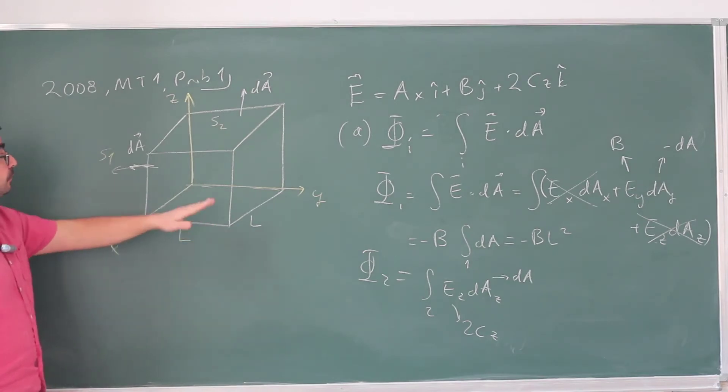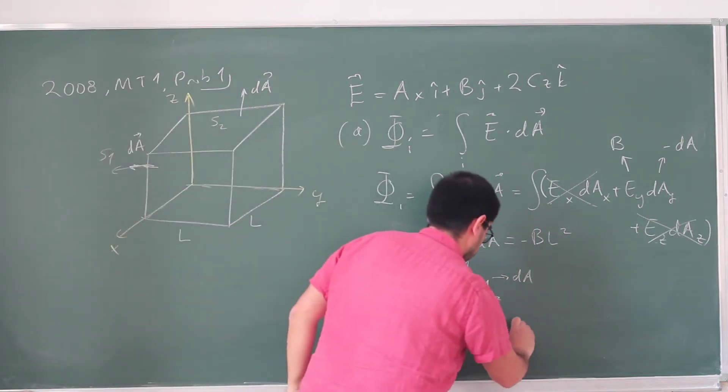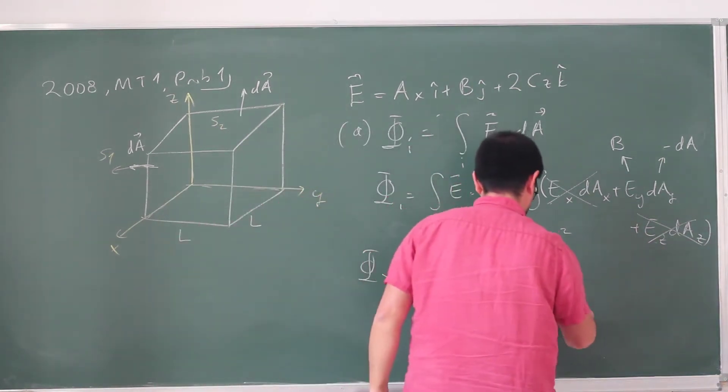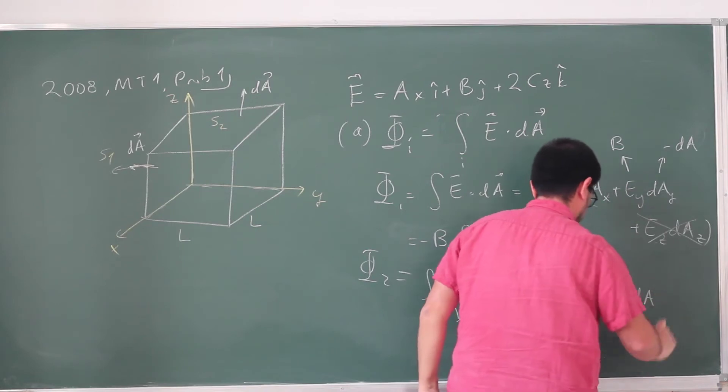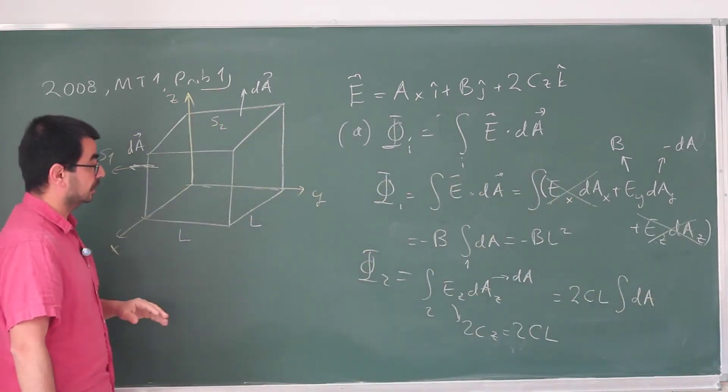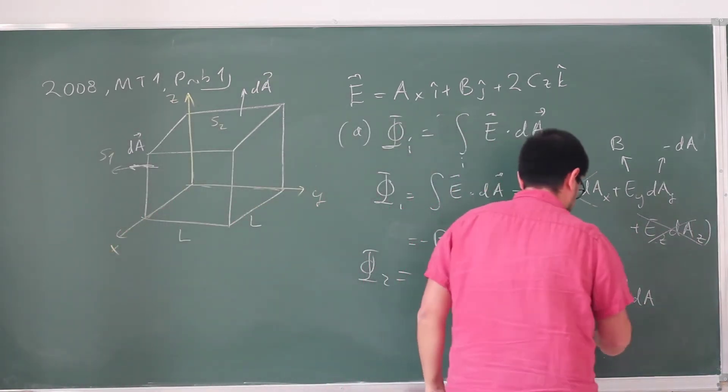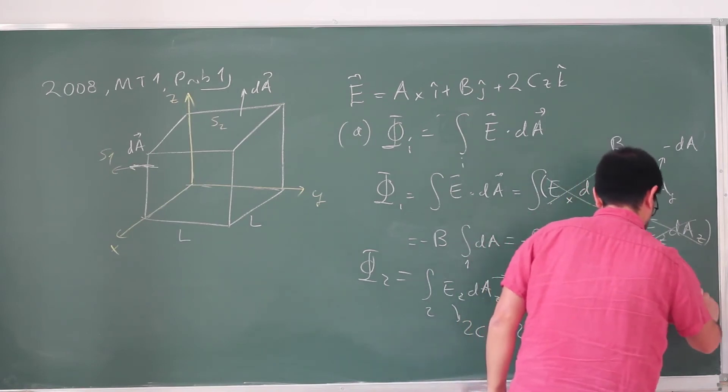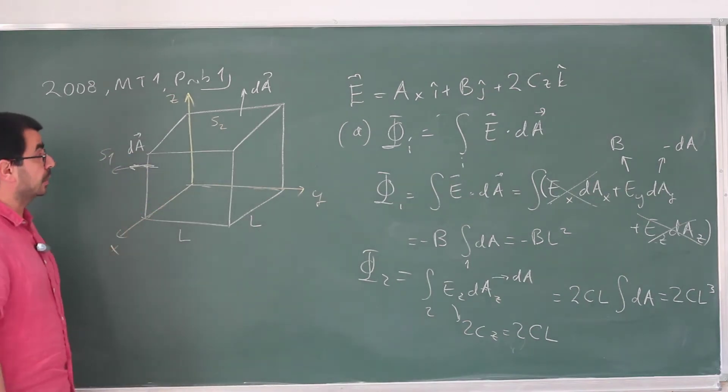Now what is the value of z? Well, for this face, the value of z is just L. So this in fact becomes 2CL. And we can write this 2CL times the integral of dA. We don't pick up any negative sign. This is pointing in the positive direction. And this just gives L squared again. So this becomes 2CL cubed.